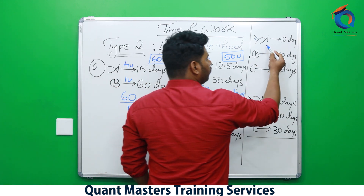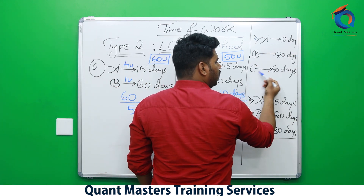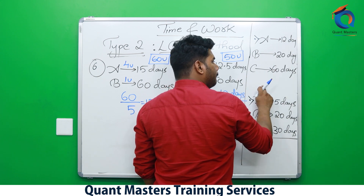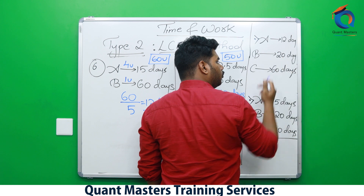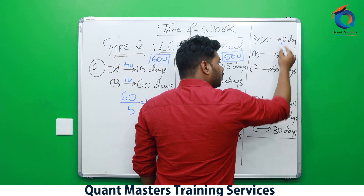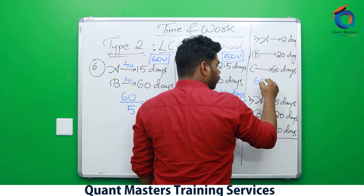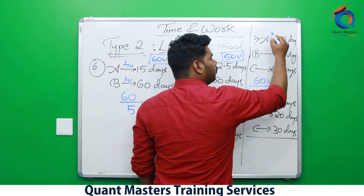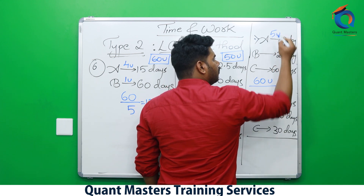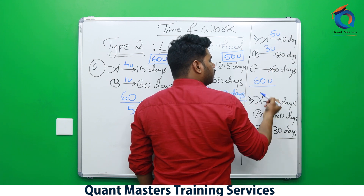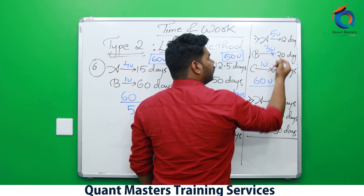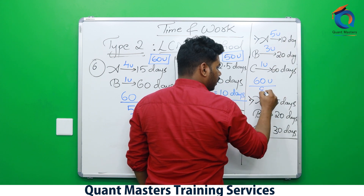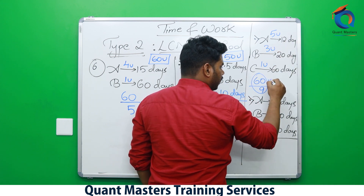Now three workers: A takes 12 days, B takes 20 days, C takes 60 days. 60 is a multiple of 12 and 20, so LCM is 60. A does 5 units per day, B does 3 units per day, C does 1 unit per day. Together: 5 + 3 + 1 = 9 units per day. Answer is 60/9 days.